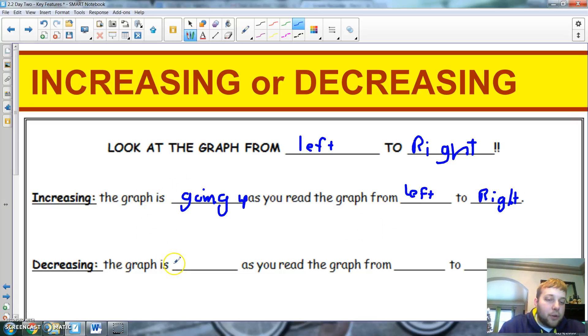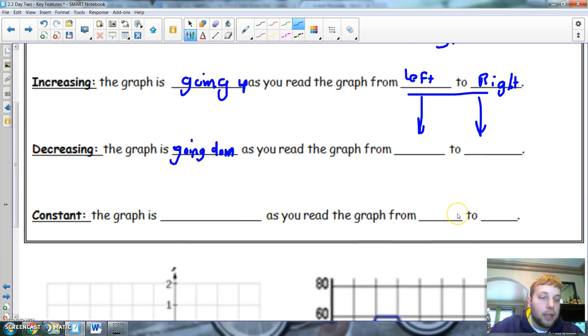And decreasing means the graph is going down. Going down, going down. It's called decreasing, and it's also from left to right. And, by the way, you guys do realize that I am just writing with this thing, and it's a little frustrating.